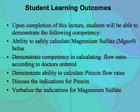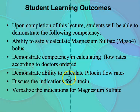Let's look at some of our learning objectives for this lesson. Upon completion of this lecture, students will be able to demonstrate the ability to safely calculate magnesium sulfate bolus, demonstrate competency in calculating flow rates according to doctor's orders, calculate pitocin flow rates, discuss the indications for pitocin, and verbalize indications for magnesium sulfate.